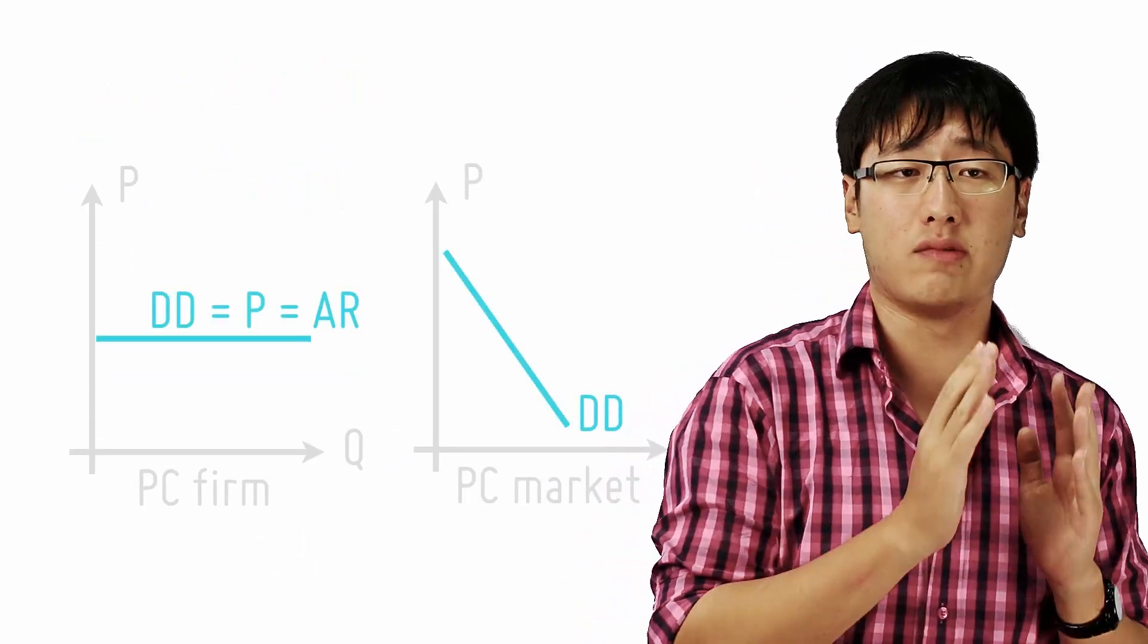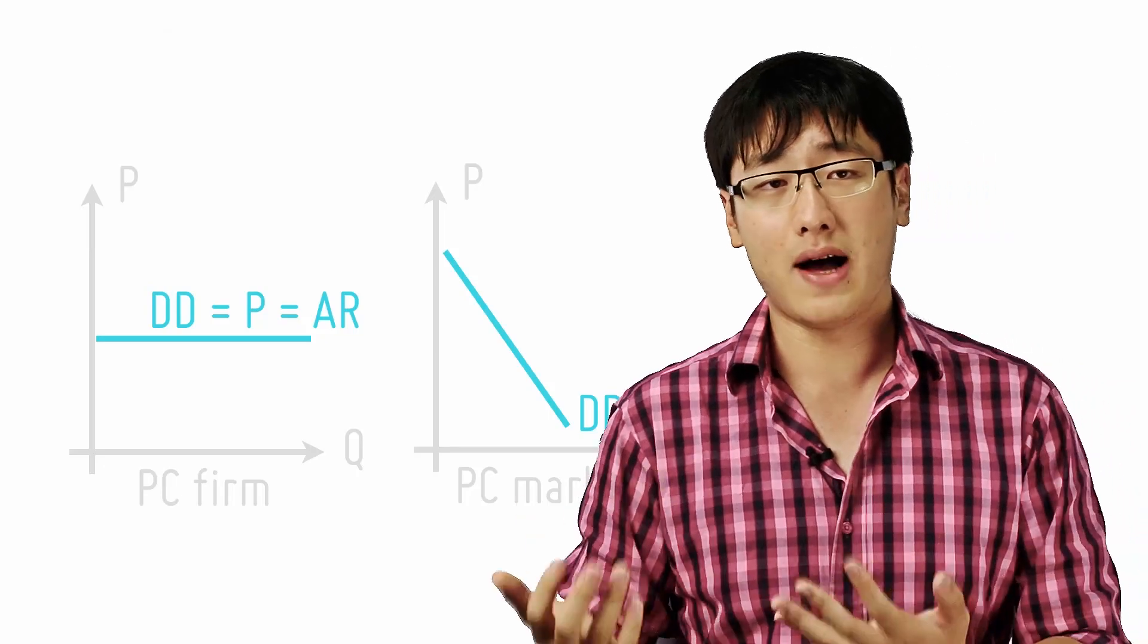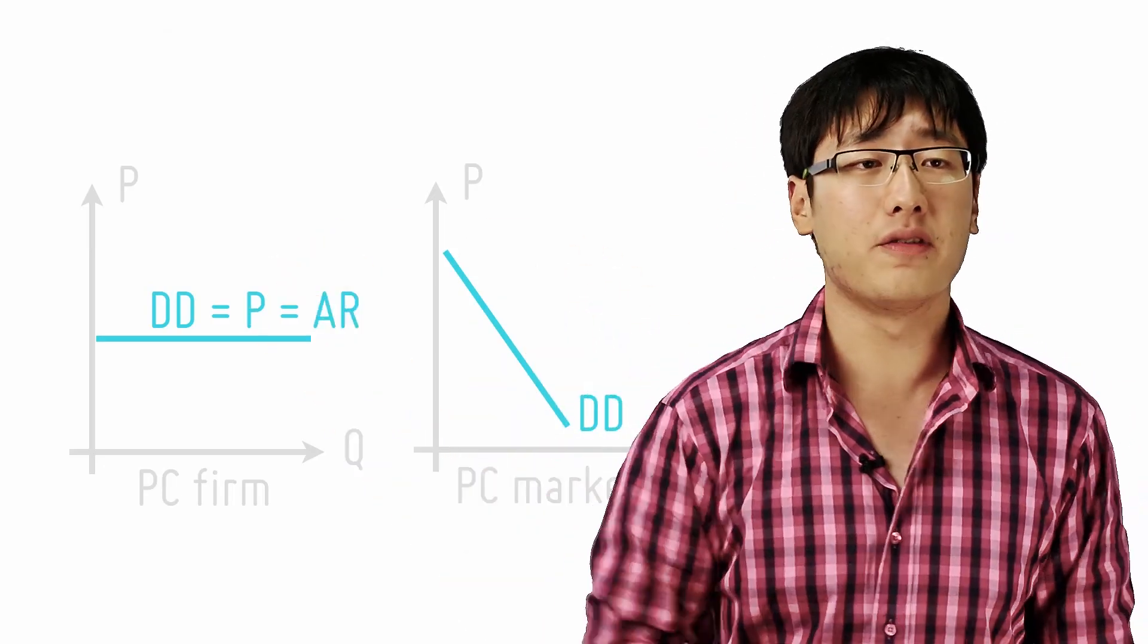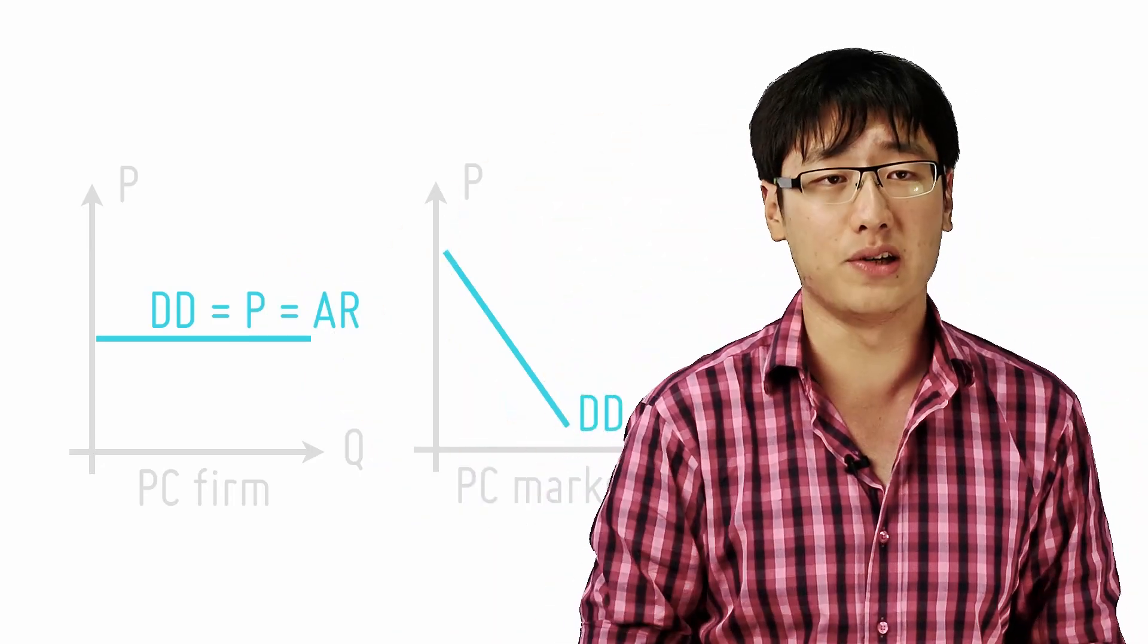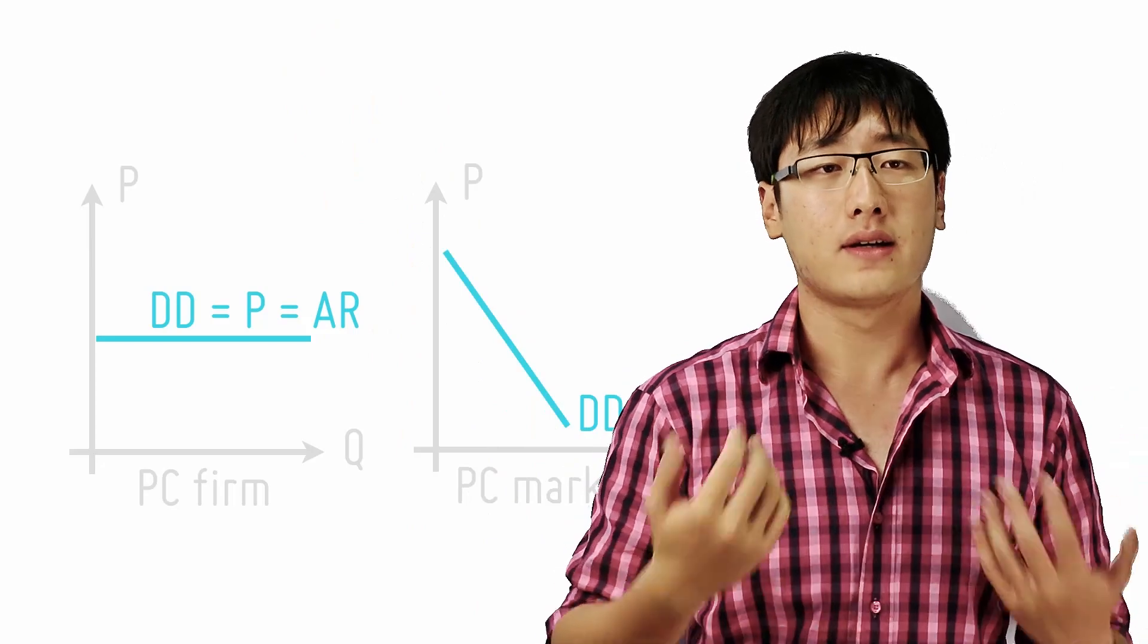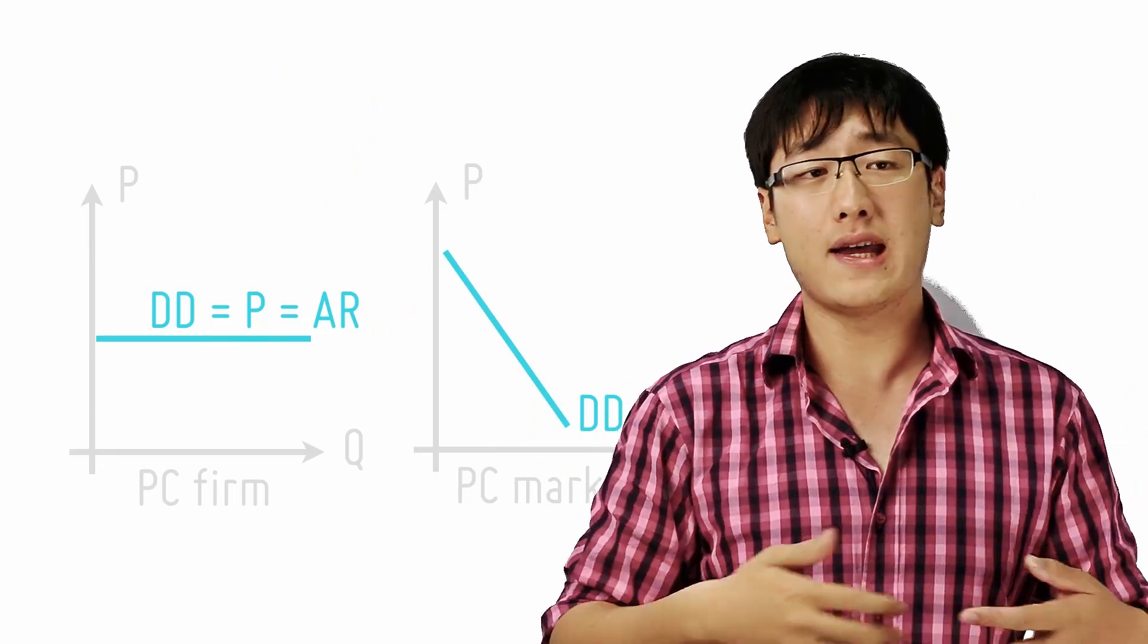Now, listen. Here, we need to differentiate between the curve of a firm and that of a market. The firm faces a horizontal demand curve. But the industry as a whole, all 1,000 producers, still face a downward sloping demand curve. And that's because they're looking at the industry as a whole.